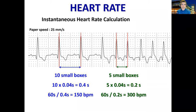In this ECG the heart rate speeds up. We can see now that we have half the number of boxes compared to the first interval — just 5 little boxes between one R wave and the next. So we multiply 0.04 by 5, which equals 0.2 seconds, and then divide 60 by 0.2 seconds to get an instantaneous heart rate of 300 beats per minute.